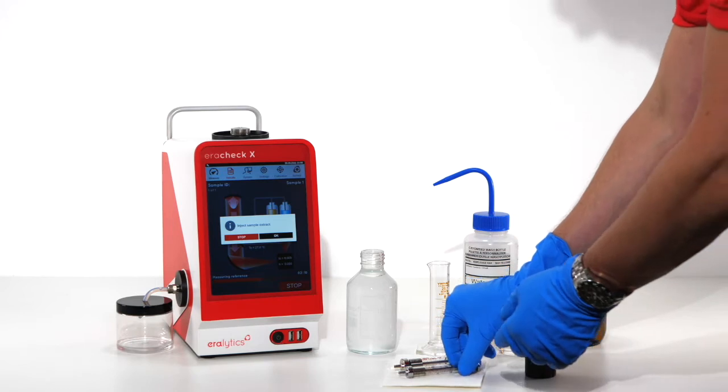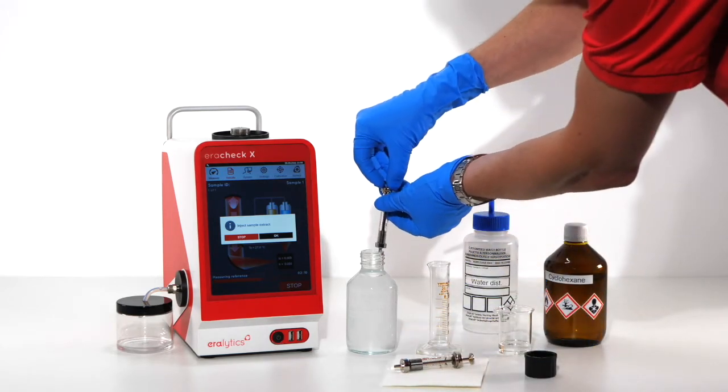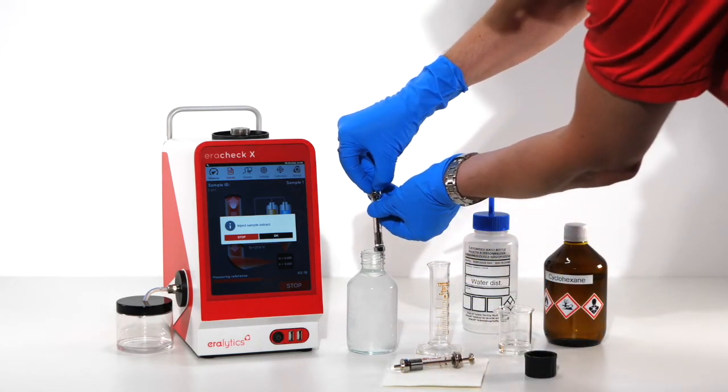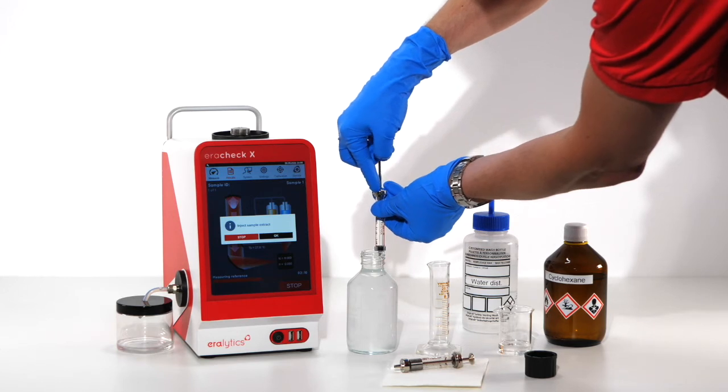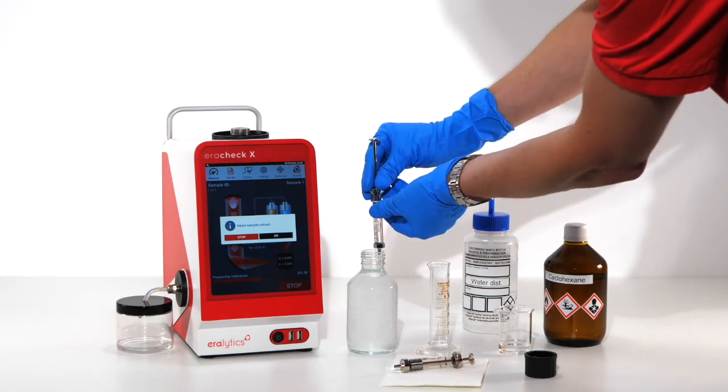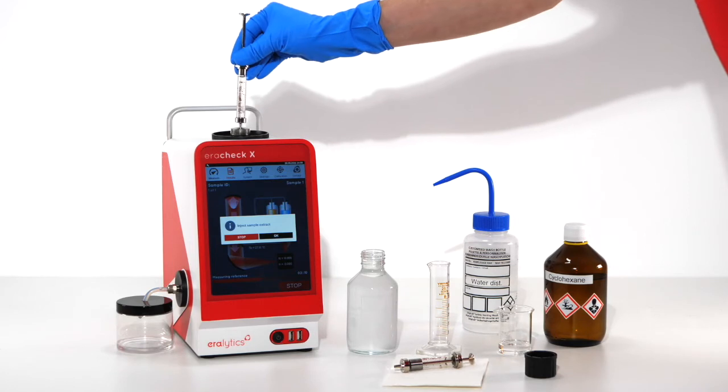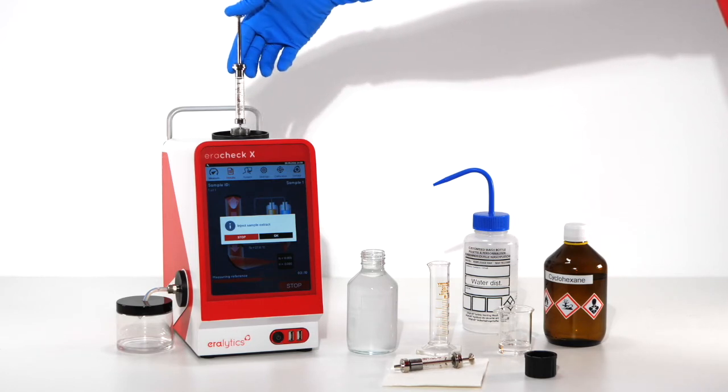Extract 3 ml. Then attach the syringe to the inlet assembly on the top of the analyzer. Slowly inject the sample and press OK on the screen.